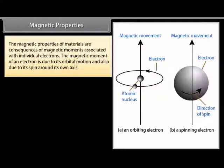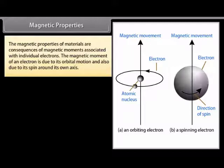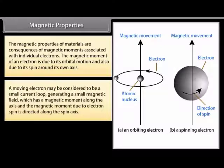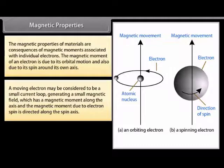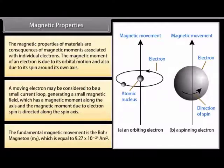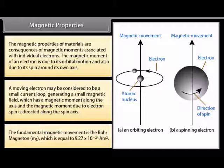The magnetic properties of materials are consequences of magnetic moments associated with individual electrons. The magnetic moment of an electron is due to its orbital motion and also due to its spin around its own axis. A moving electron may be considered to be a small current loop generating a small magnetic field with a magnetic moment along the axis. The fundamental magnetic moment is the Bohr magneton, Mb, which is equal to 9.27 × 10⁻²⁴ A·m².